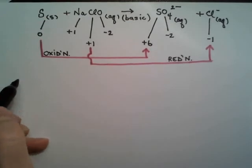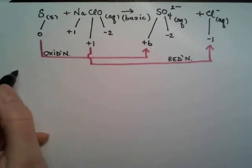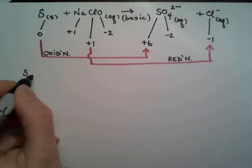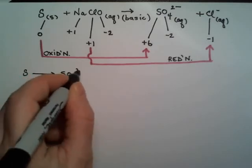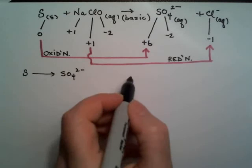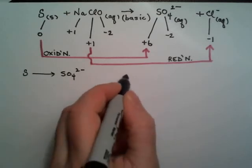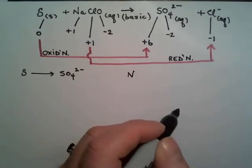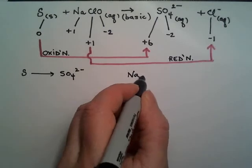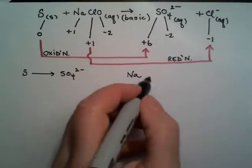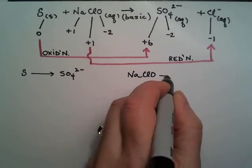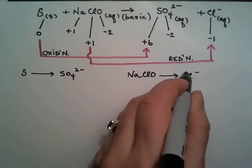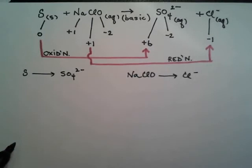The oxidizing agent is chlorine in the sodium hypochlorite. The reducing agent is solid sulfur. We'll write out our two half reactions. We'll start with sulfur, and the other half reaction is reduction.